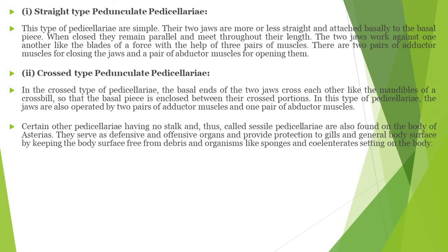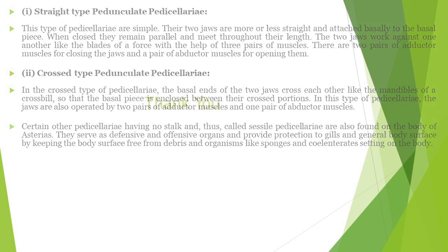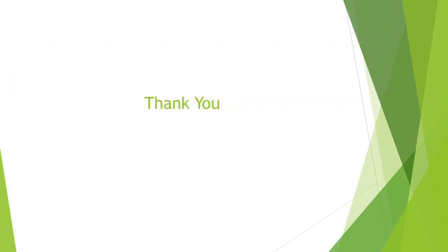This covers the basic structure of starfish for Part One, in which we have seen the habit and habitat, general morphology, oral and aboral surfaces, and various structural variations of Asterias.